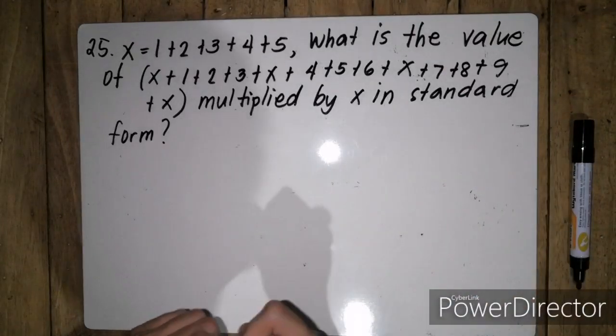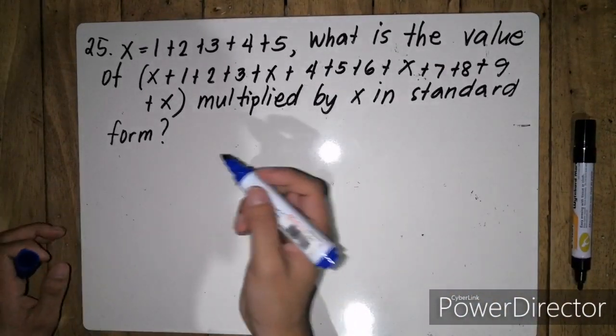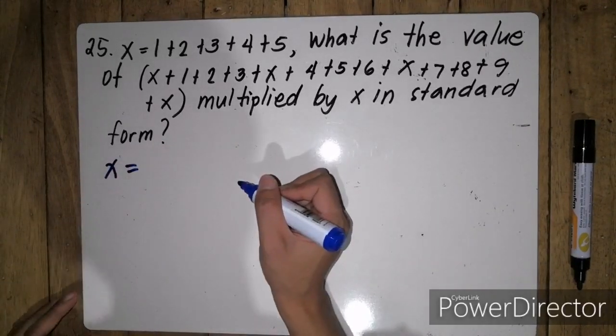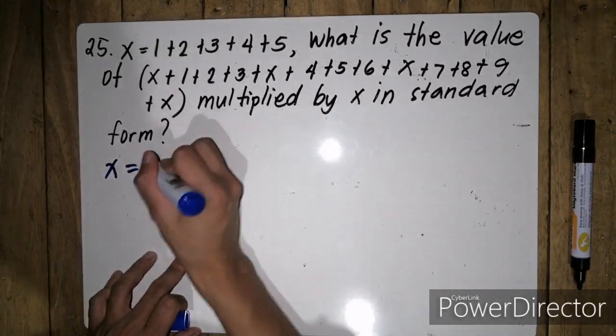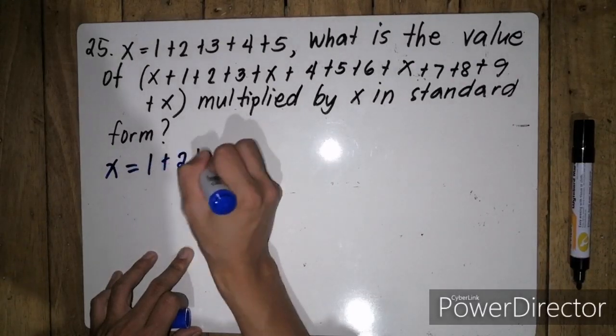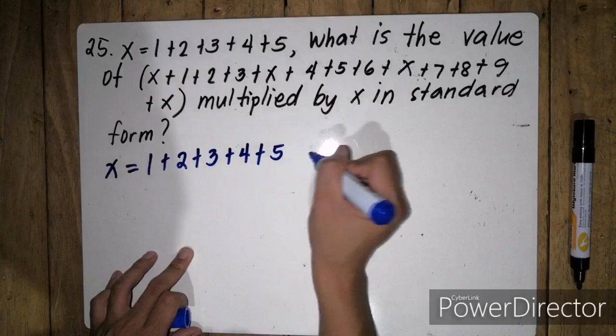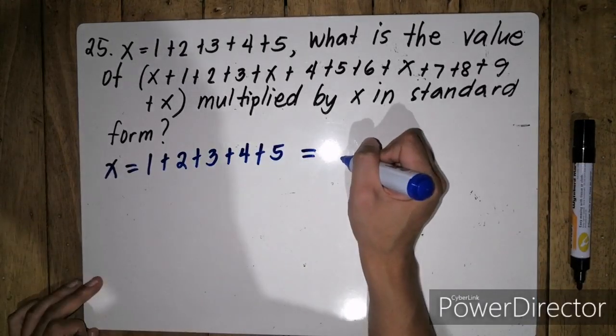Let us first find the value of x. So x is simply 1 plus 2 plus 3 plus 4 plus 5, which is simply equal to 15.